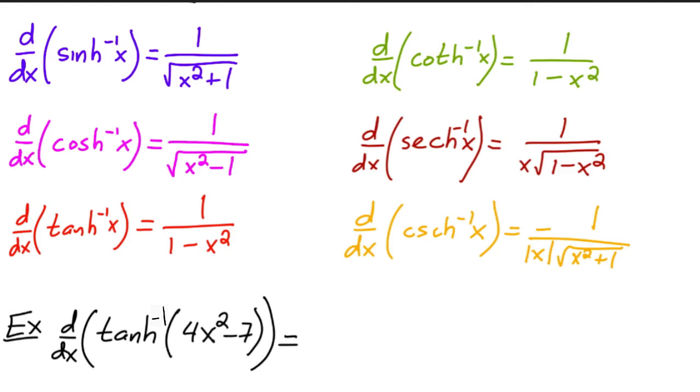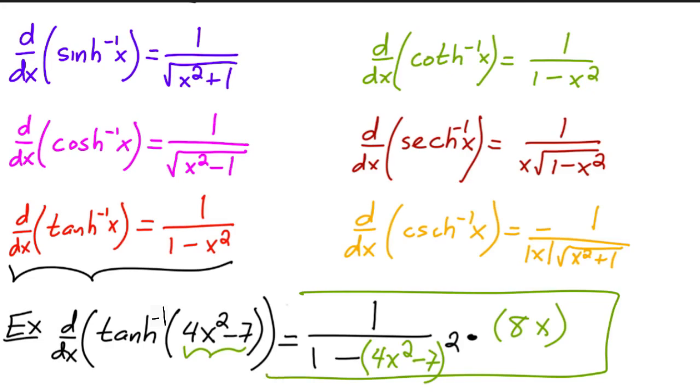So, of course, you would have to use the chain rule, and you're going to use this guy, so we're going to have 1 over 1 minus, now instead of x squared, I'm going to have the inside left alone, all squared, and then times the derivative of that inside, which is simply 8x. And that's it.